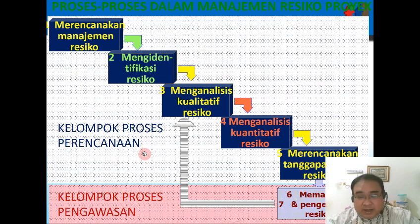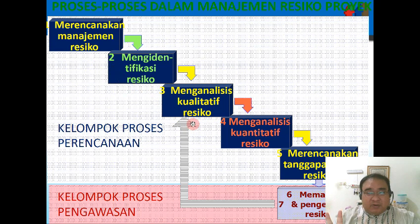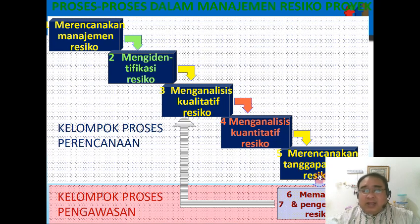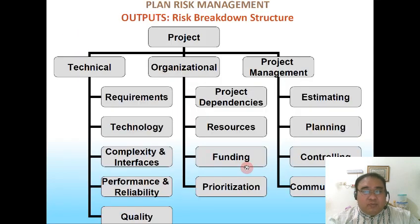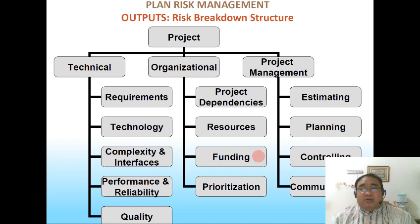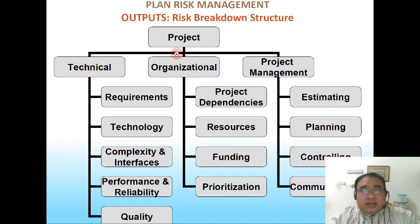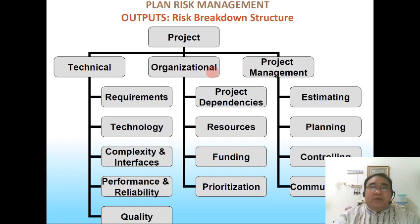Langkah-langkah dalam manajemen resiko pada prinsipnya adalah: kita melakukan perencanaan, mengidentifikasi resiko, menganalisis faktor severity dan probability-nya, lalu merencanakan tanggapan atau contingency plan, lalu bagaimana kita menyusun tim dan melakukannya. Dalam sebuah organisasi proyek, selain WBS atau Work Breakdown Structure, kita juga bisa melakukan apa yang disebut dengan Risk Breakdown Structure — suatu cara untuk mengetahui resiko yang mungkin terjadi dalam proyek kita dapat berasal dari bagian mana saja.